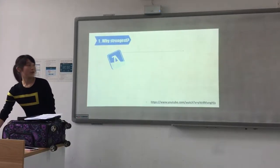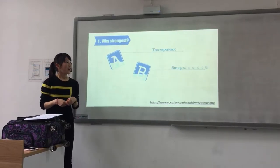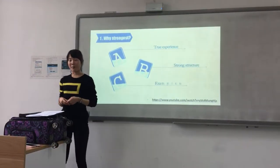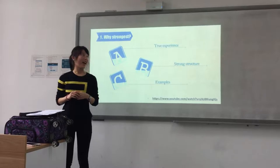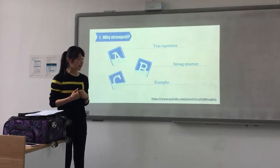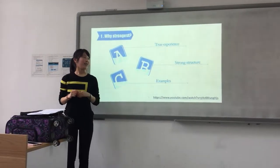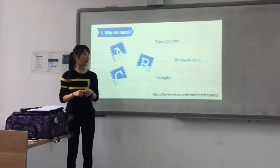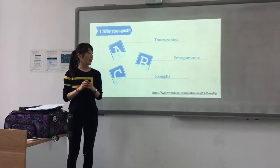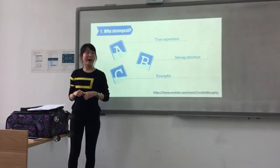First, why did I choose this essay? There are three reasons accounting for it. The first one is that I have been to Australia when I was in junior high school, so I have two experiences. The second one is that this essay has a strong structure. And the last one is I use some examples to support my ideas.